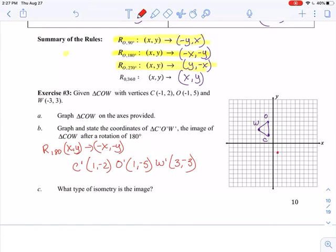So I am going to plot each of these. So (1, -2), that's my C prime. (1, -5), that's my O prime. And (3, -3), that's my W prime. And I connect them. It should be the same shape, same size. All I've done is change the position of it.